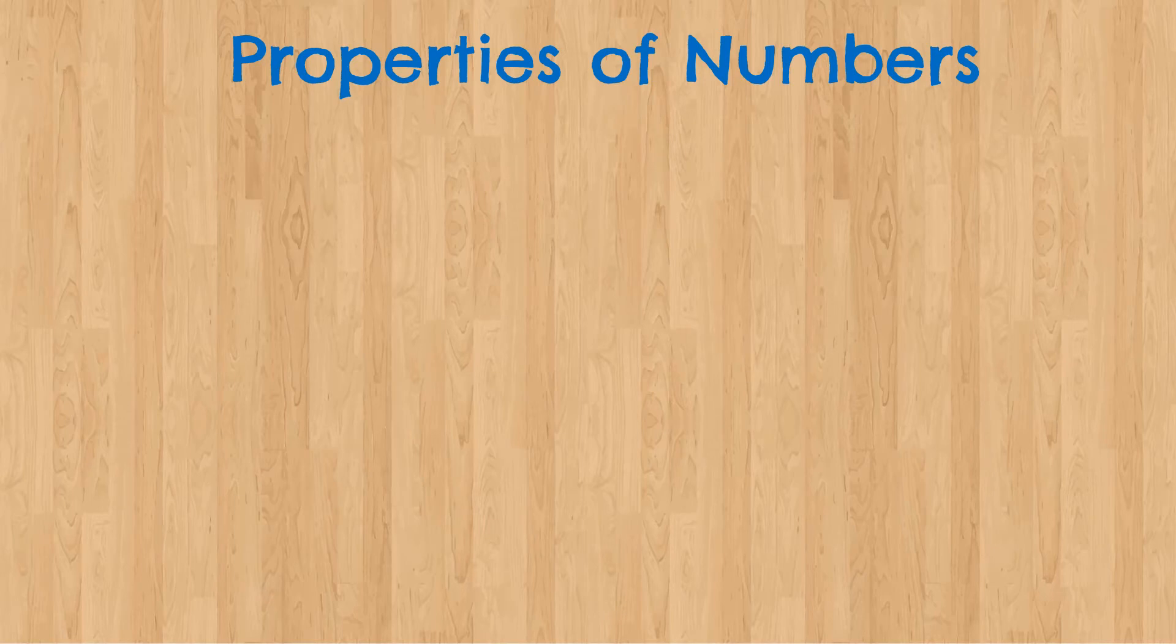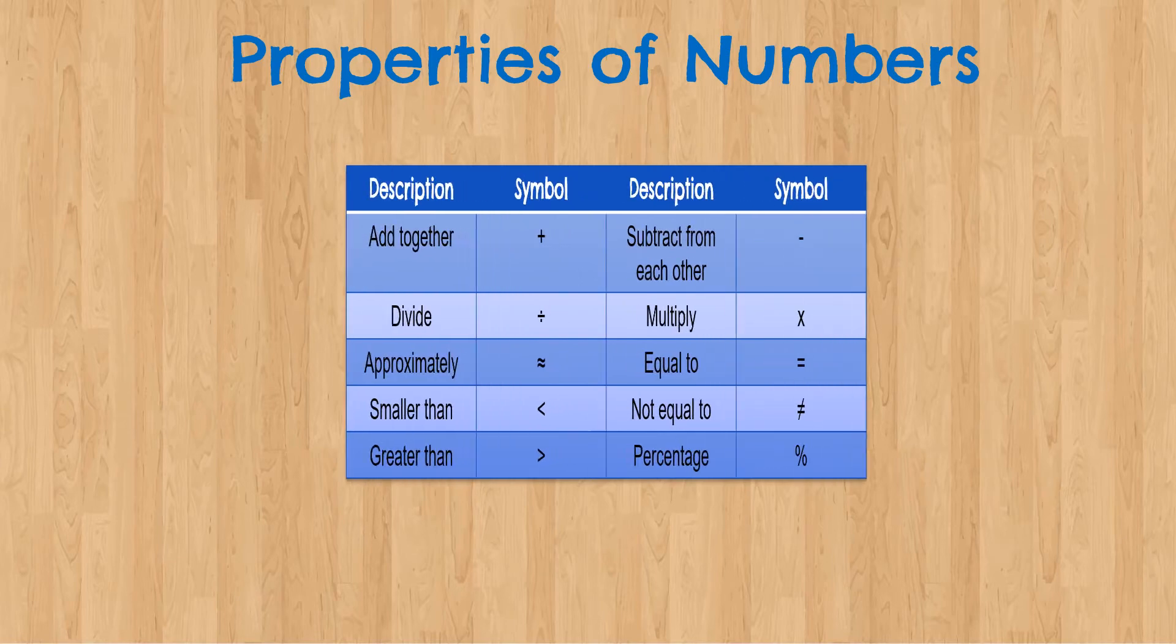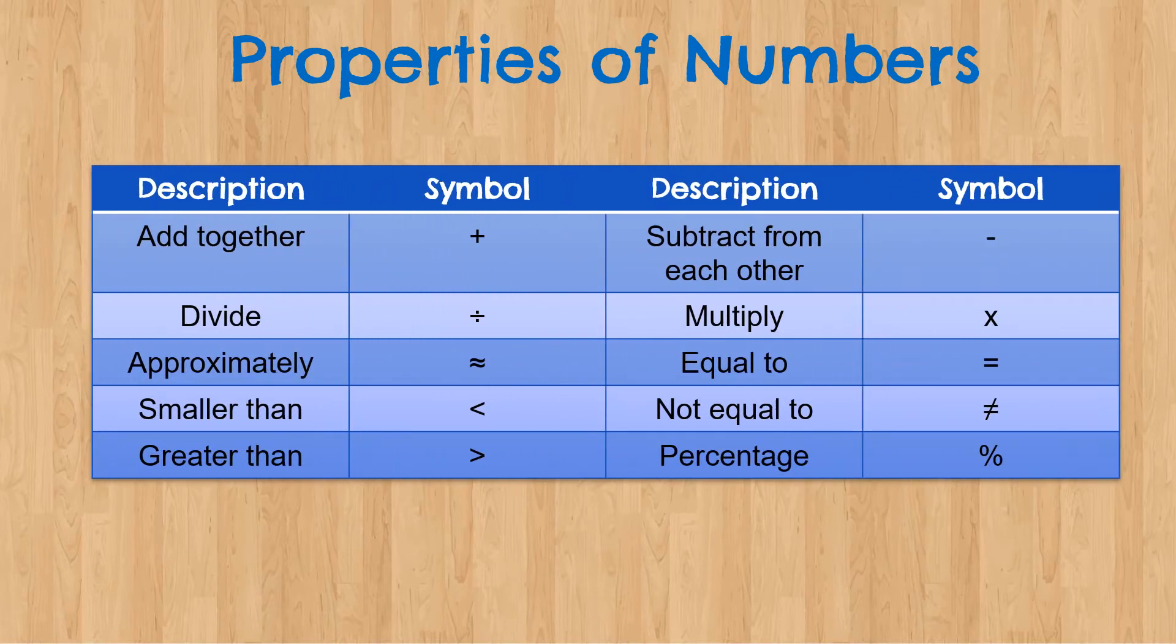The next part of this chapter introduces us to the properties of numbers. Once again, we have a column. It's a description, symbol, description, symbol. Please familiarize yourself with this table. You have to know the symbol for add together, divide, approximately, smaller than, greater than. Subtract from each other, multiply, equal to, not equal to and percentage.